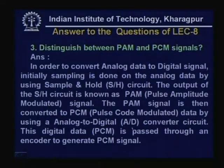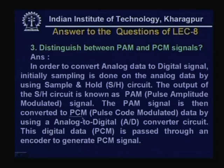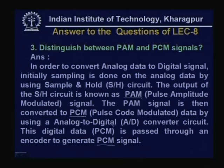Third question: Distinguish between PAM and PCM signals. To convert analog data to a digital signal, sampling is first done using a sample-and-hold circuit. The output of the sample-and-hold circuit is known as a PAM (Pulse Amplitude Modulation) signal. The PAM signal is then converted to a PCM signal using an analog-to-digital converter to quantize the signal and an encoder to generate the PCM signal. PAM is essentially an intermediate step in obtaining the PCM signal.